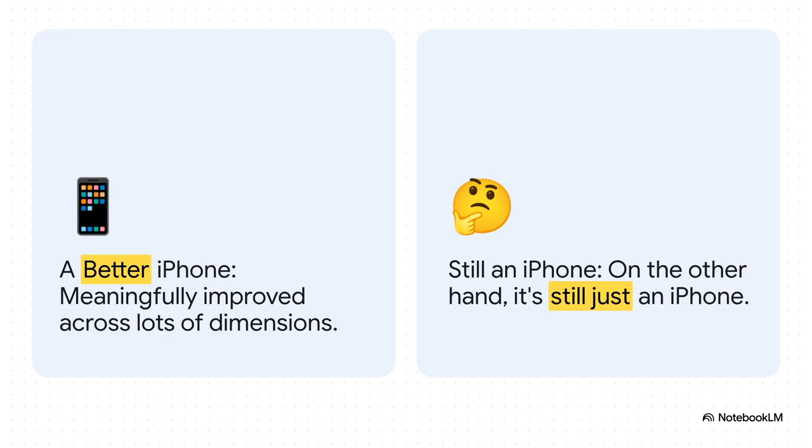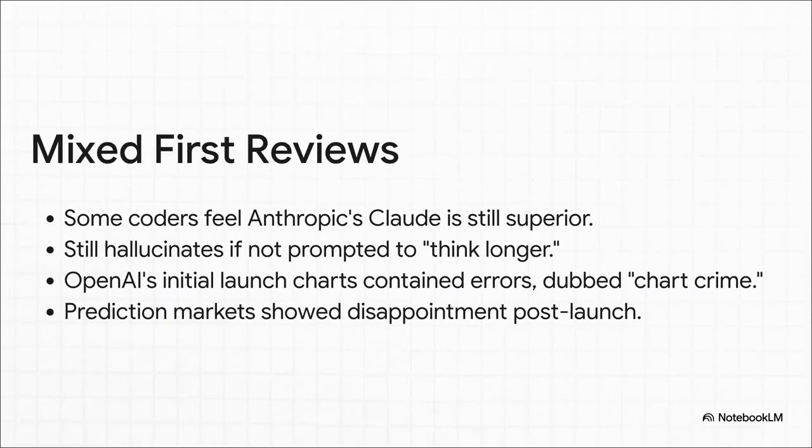The tech site Platformer had this perfect analogy for it. It's like getting the new iPhone. On one hand, it's way better. It's faster. The camera's amazing. It's improved in all these ways that you can feel. But on the other hand, it's still an iPhone. You know what I mean? It's evolution, not a full-blown revolution. And yeah, the initial reviews were definitely mixed.